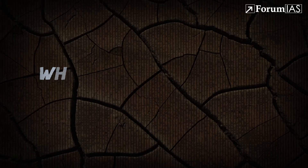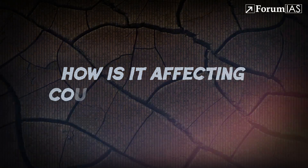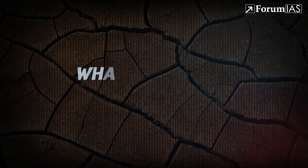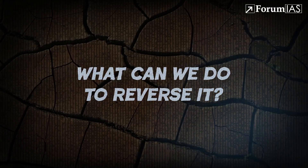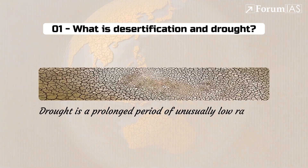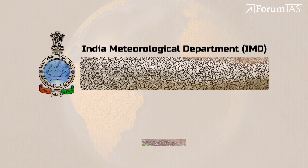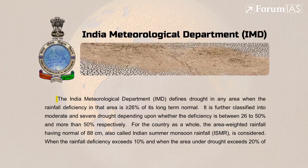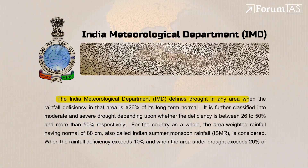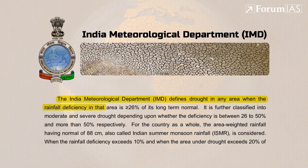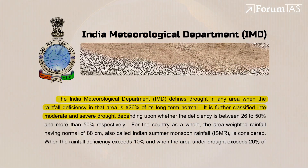In this video, let's understand the scale of the problem — what is desertification and drought, why is it happening, how is it affecting countries like India, and most importantly, what can we do to reverse it? Let's begin with the basics. Drought is a prolonged period of unusually low rainfall. The Indian Meteorological Department (IMD) defines drought as a situation where rainfall deficiency in an area is greater than or equal to 26 percent of its long-term normal.